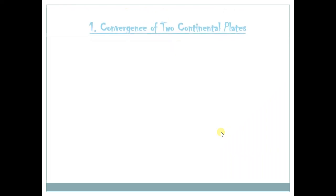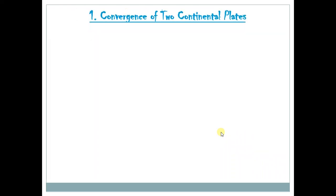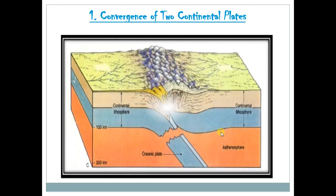Actually, there are three kinds of convergent plate boundary. The first one is the convergence of two continental plates. What would happen if we have two continental plates colliding against each other? In this picture, we can see what is being formed when two continental plates are colliding. This is a continental plate, and this is another continental plate. They would bump against each other, and as you can see, there would be folds and folding, which would lead to the formation of mountain ranges.